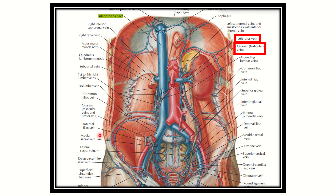Let's look at the inferior vena cava here. This structure is the inferior vena cava. We can see it is formed by the two common iliac veins — the left common iliac vein and the right common iliac vein — forming the inferior vena cava at the level of the L5 vertebra.